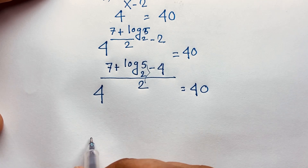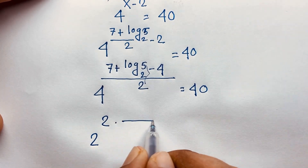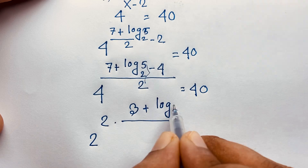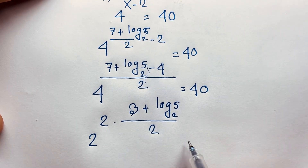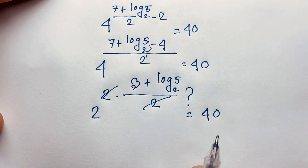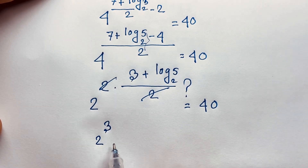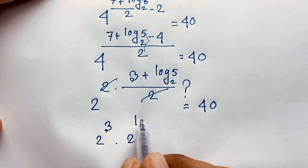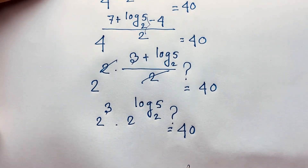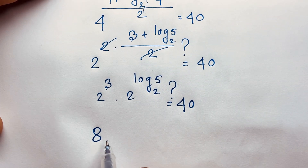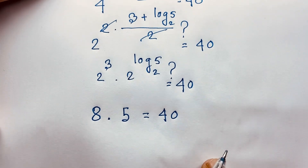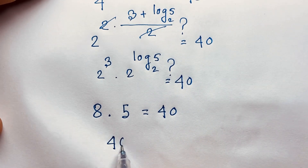These 2s in the exponent and base combine: 4 to the power (3 plus log₂5) over 2 becomes 2 to the power (3 plus log₂5). This gives 2 to the power 3 times 2 to the power log₂5. Now 2 to the power 3 is 8, and 2 to the power log₂5 equals 5. So we get 8 times 5 equals 40, which equals 40. Verified!